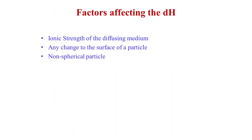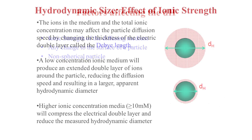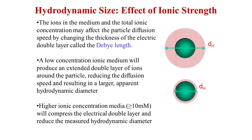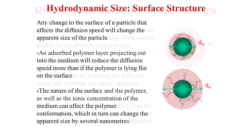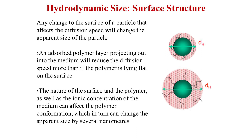What are the factors affecting the hydrodynamic diameter? The first is ionic strength of the medium. The ions in the medium and total ionic concentration may affect particle diffusion speed by changing the thickness of the electrical double layer, called the Debye length. A low ionic concentration medium produces an extended double layer of ions around the particle, reducing diffusion speed and resulting in a larger apparent hydrodynamic diameter. Higher ionic concentration compresses the electric double layer and reduces the measured hydrodynamic diameter.